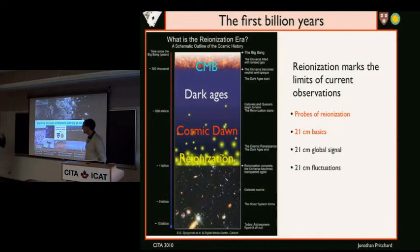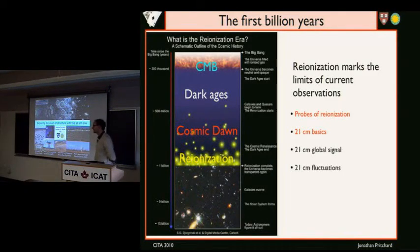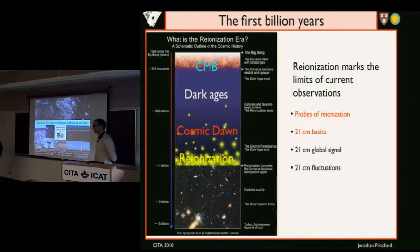Today we have Jonathan Pritchett here. He was an undergrad student in Cambridge and then moved to Caltech to work with Mark Minkowski, finishing his PhD in 2007. And now he's a Hubble IPC fellow at Harvard.